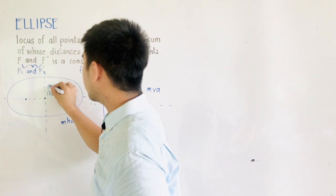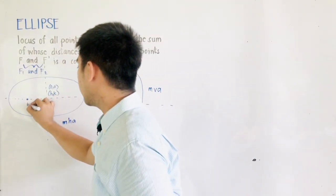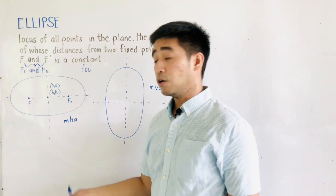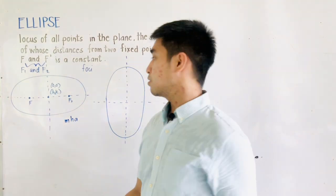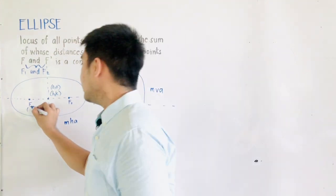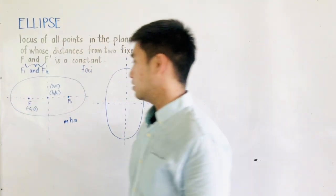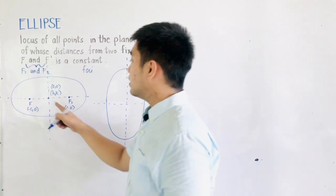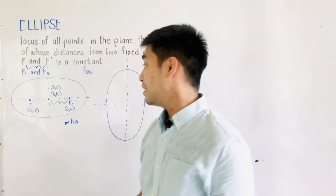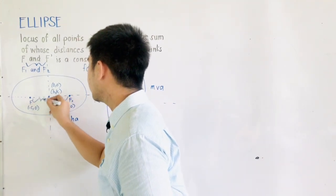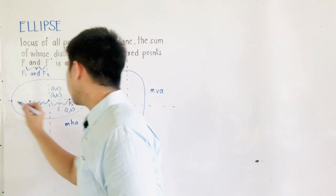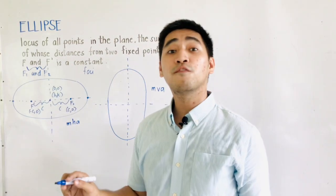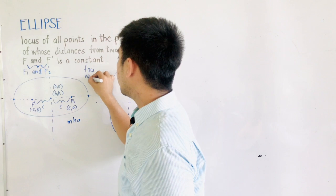For example, if our center is located at the origin, this is F1 (or F) and this is F2 (or F'). So F1 is at negative C and 0, and F2 is at C and 0 — because the distance from the center to one of the foci is C. The endpoints of the ellipse along the major horizontal axis — we call those vertices.